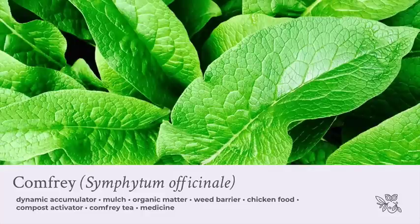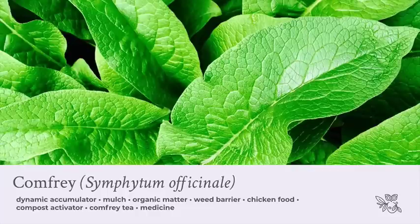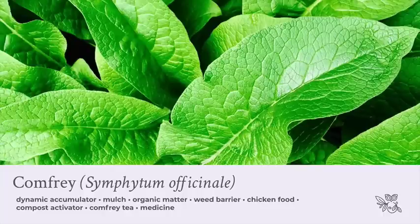I couldn't do a top 10 permaculture plants talk without talking about comfrey. Comfrey is one of the most essential plants for getting a permaculture garden going — it's one I plant very early in a system to build up the soil, provide mulch, create organic matter, and create natural edges. It provides weed barriers: you can create a great big line of comfrey, mulch on one side, and it helps protect from weeds coming through.